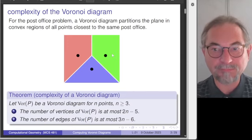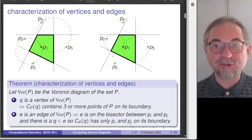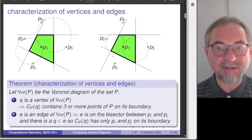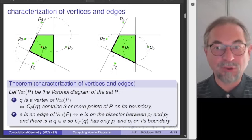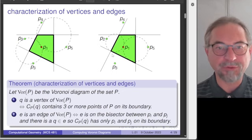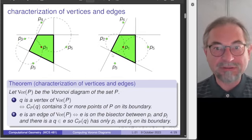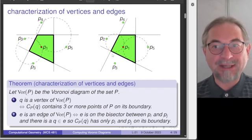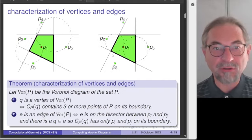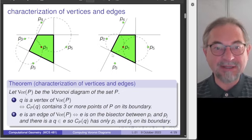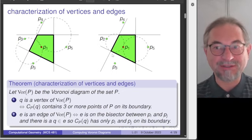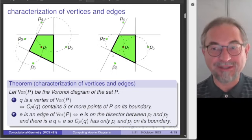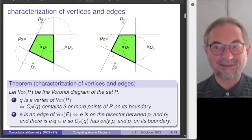Today we introduce the algorithm. Here is one cell of a Voronoi diagram — what is shaded in green is the Voronoi cell for site P1. There are four other points, four corners, and four edges. The corners, also called the vertices of a Voronoi cell, are at the center of a circle through three sites, and this is the largest empty circle that is free of sites.